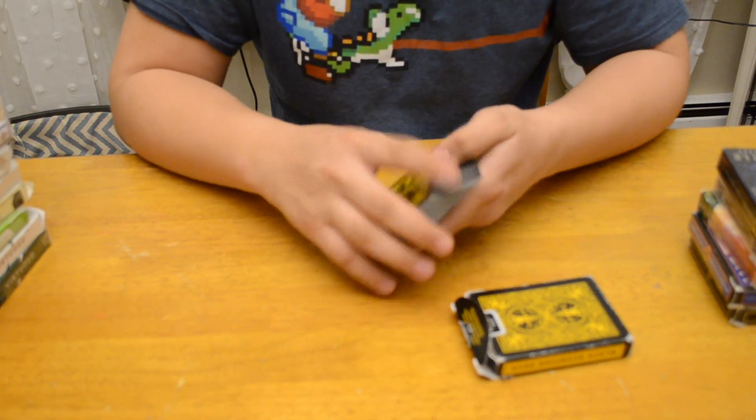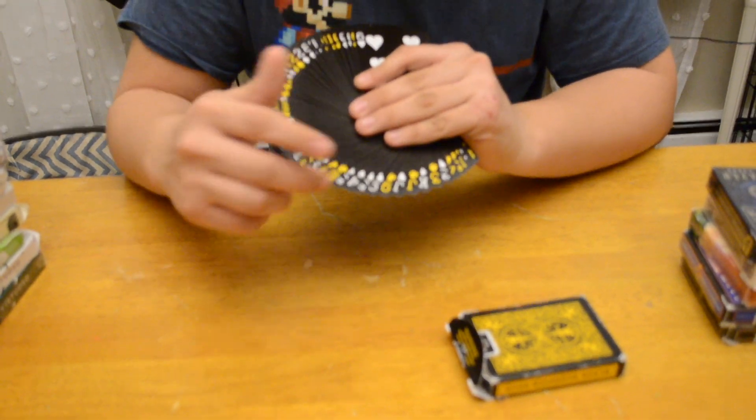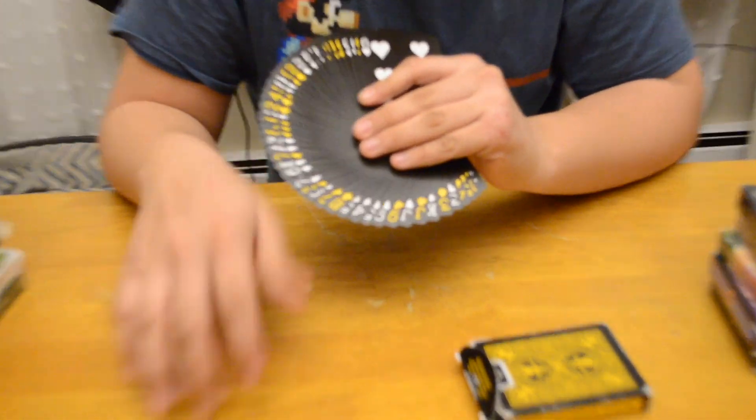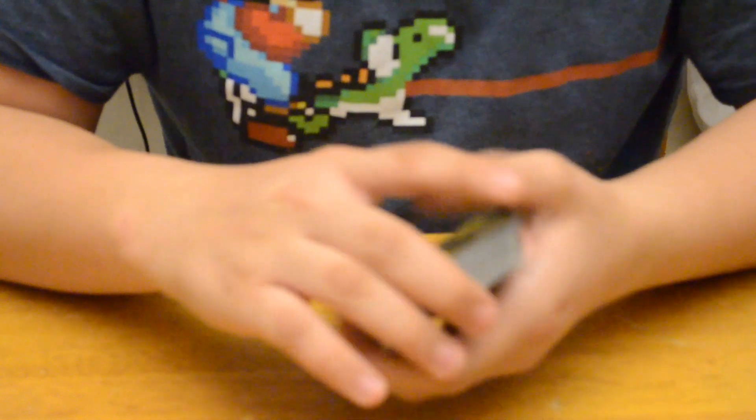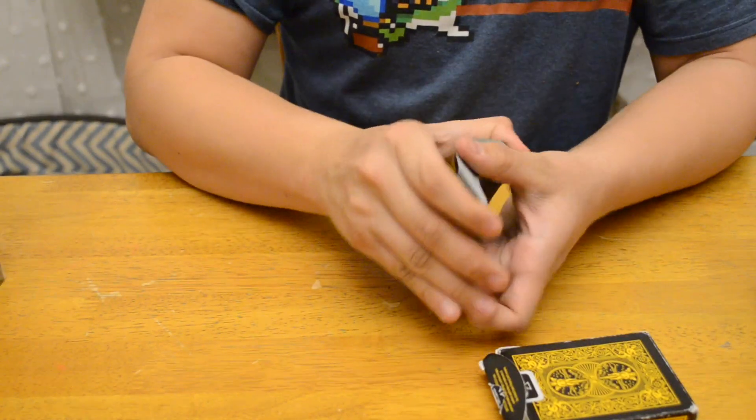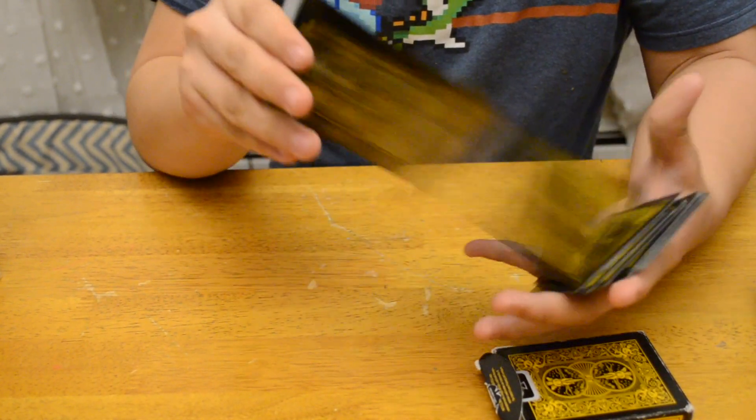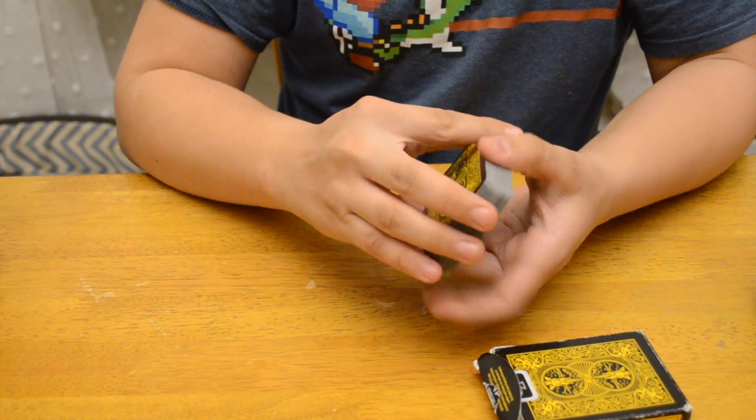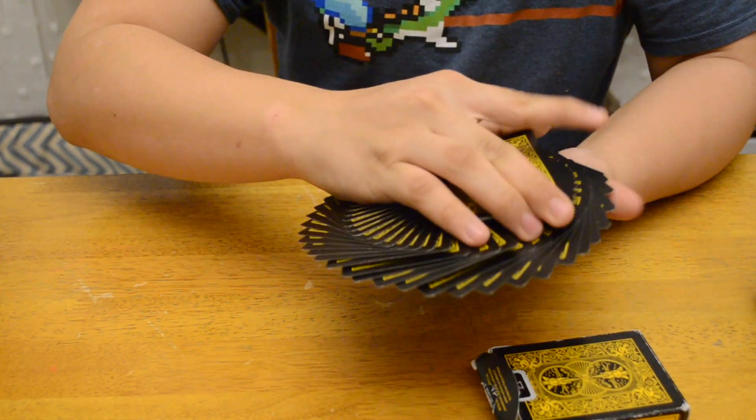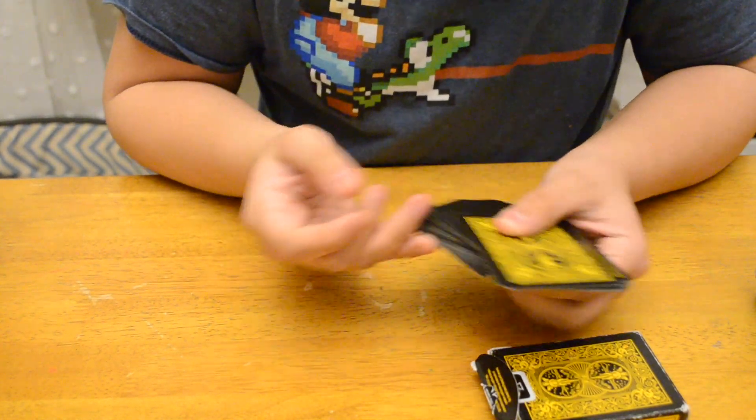This is the black scorpion deck. It's an okay deck. Looks kind of neat. The black cards are yellow and the red cards are white. Usually you'd expect the red cards to be yellow. It's a really nice deck. The borders are a little thick though.